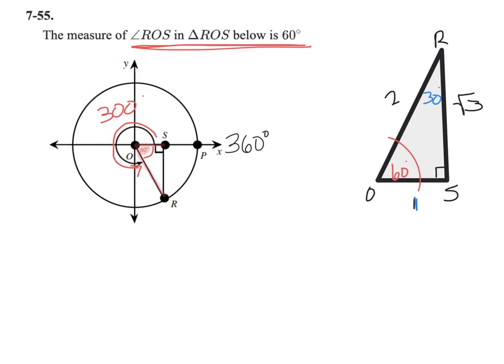But part B tells us that OR isn't 2, instead OR is 1. So if OR is going to be 1 instead of 2, I'm going to put a 1 here. But it's 2, so how can I get that 2 to be a 1? I can just divide everything by 2.